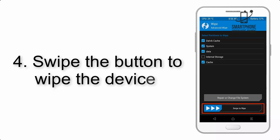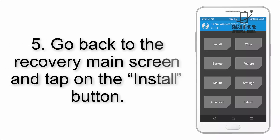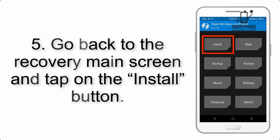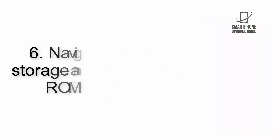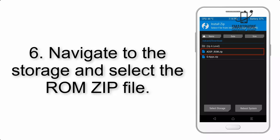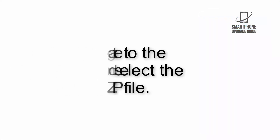Step 4: Swipe the button to wipe the device. Step 5: Go back to the recovery main screen and tap on the Install button. Step 6: Navigate to the storage and select the ROM zip file.